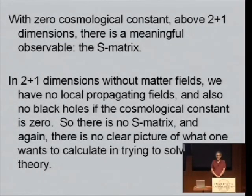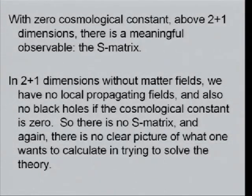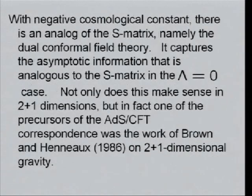There are no gravitational waves. So without matter fields, in pure gravity, there also are no black holes when the cosmological constant is 0. So there's nothing that could be scattered and therefore there's no S-matrix. And again, there's no clear picture of what you would mean by trying to solve the theory. So we'll leave aside the case of 0 cosmological constant.